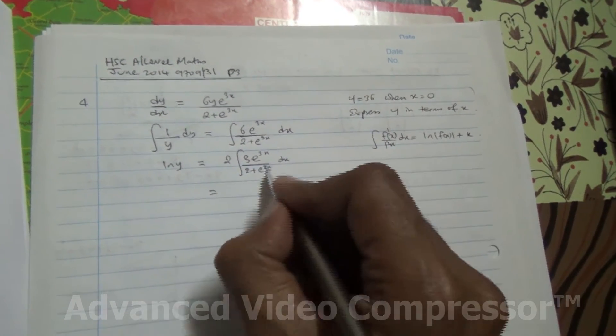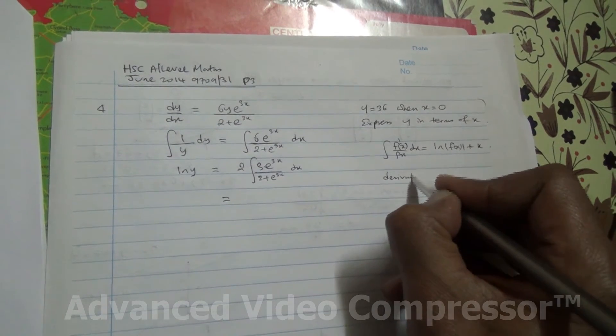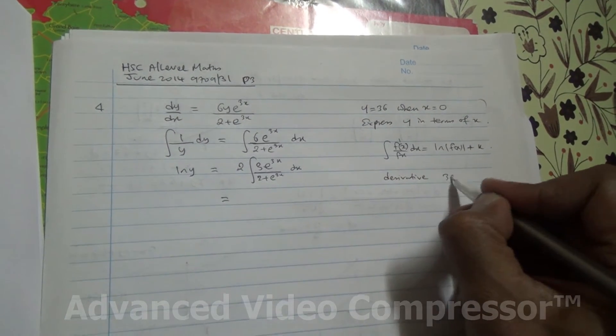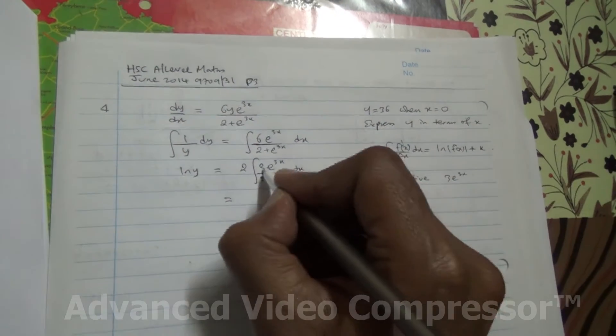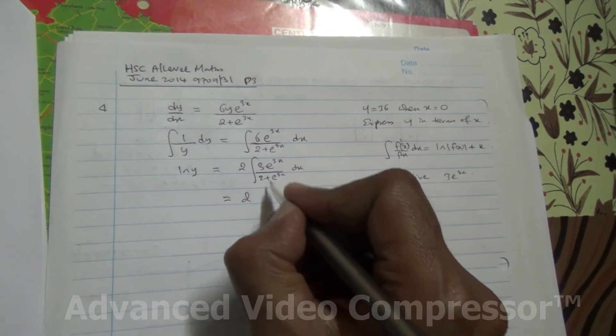Now, this is looking good, because if you differentiate this, you're going to get, what is the derivative? Derivative is going to be 3e to the 3x, and we have 3e to the 3x, therefore,